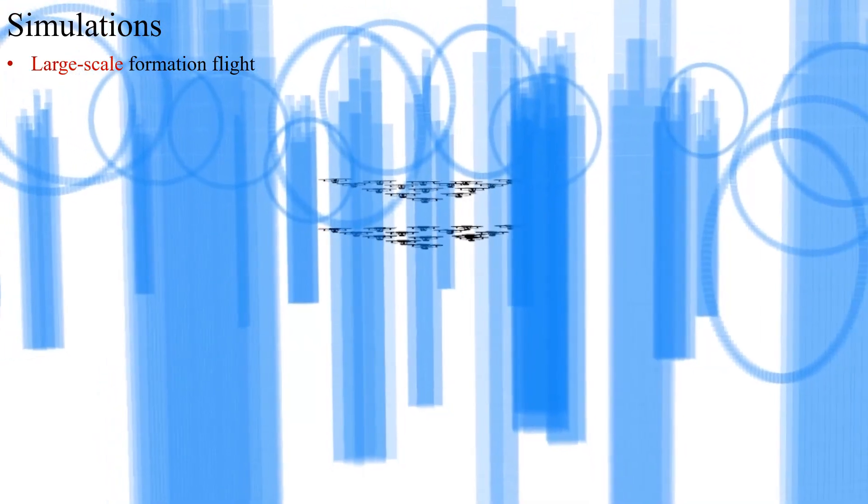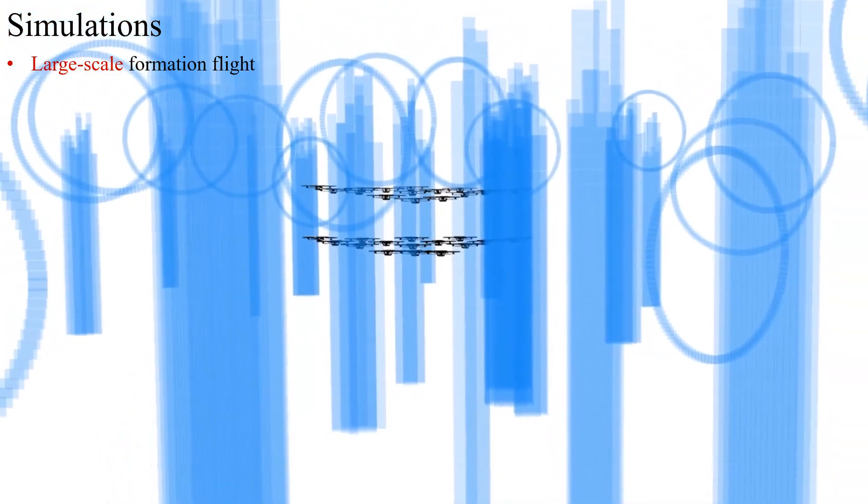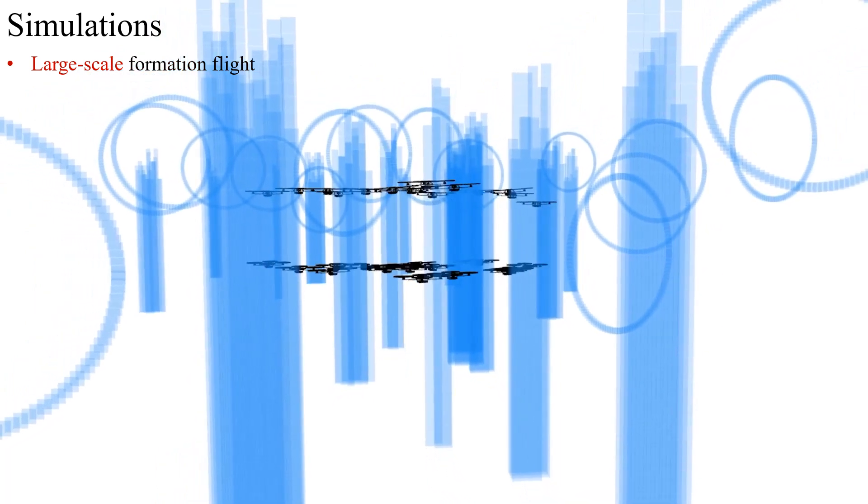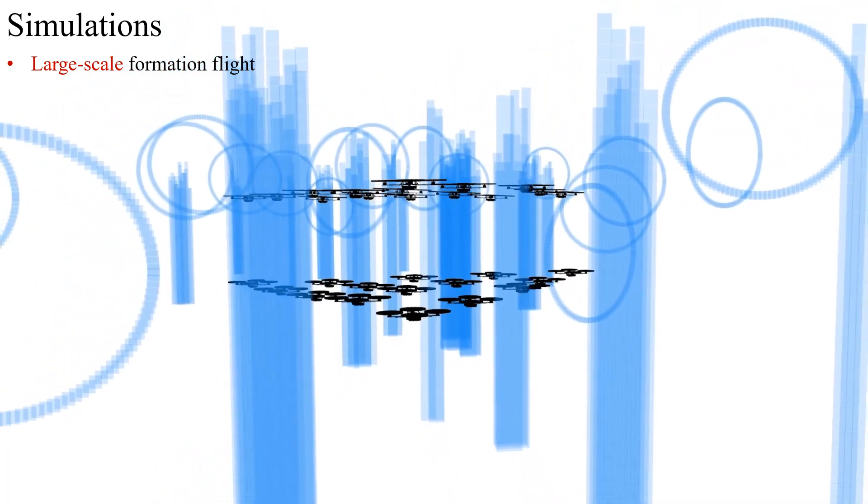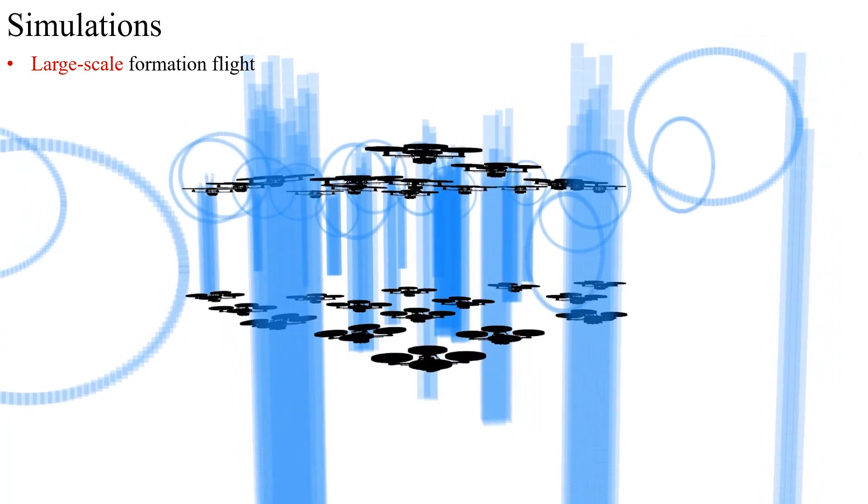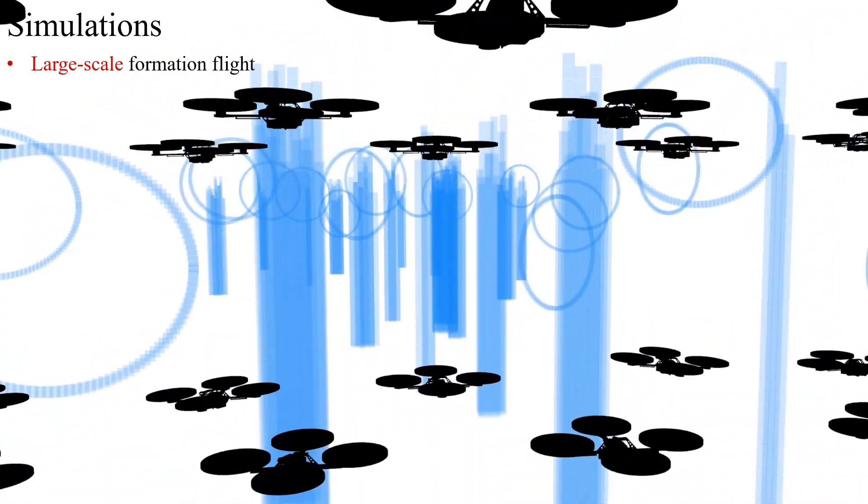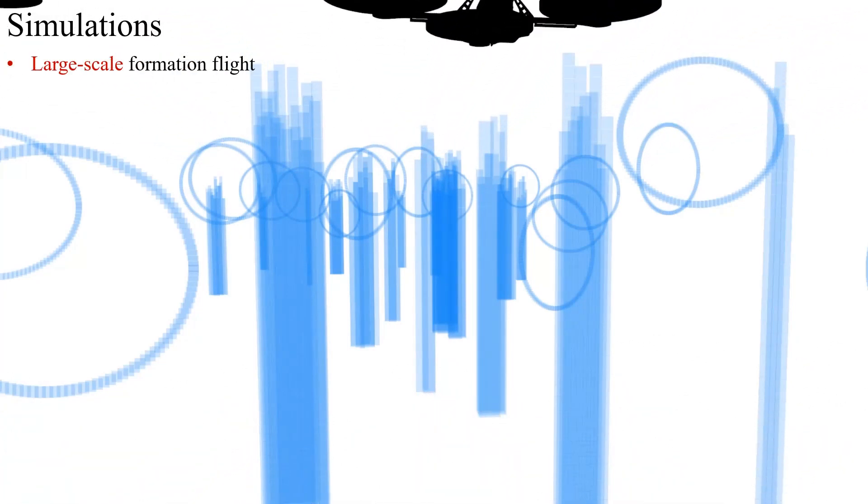What's more, we design a double arrow formation consisting of 30 drones. The swarm successfully avoids the obstacles and the desired formation is well preserved during the flight. It shows that the decoupled formation trajectory optimization results in higher efficiency, making our methods suitable for large-scale swarm robots.